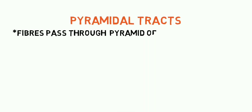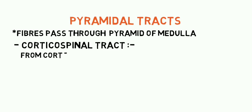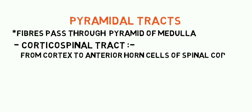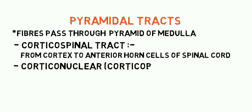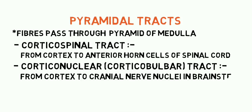The pyramidal tract includes the nerve fibers which pass through the pyramid of the medulla. In the corticospinal tract, the nerve fibers arise from the cortex and descend to the anterior horn cells of the spinal cord. In the corticonuclear or corticobulbar tract, the nerve fibers start from the motor cortex and go to the cranial nerve nuclei at various levels of the brainstem.